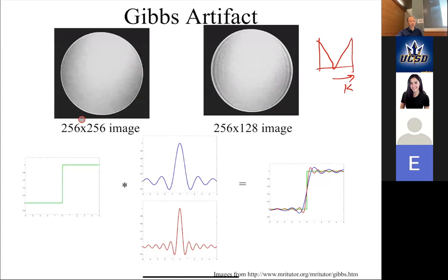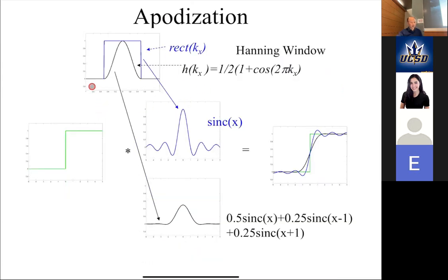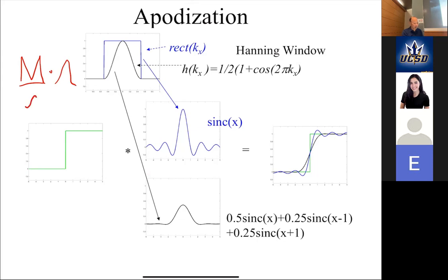So if a technologist sees Gibbs ringing, they could increase the number of phase encodes, increase the matrix size, or many MRI systems will apply some filtering in k-space. Instead of multiplying by a rect function in k-space, you multiply by a smoothing filter — so instead of a sinc function you get a nicer function. You will never see an option for a Ram-Lak filter on an MRI console. On CT, yes, but in MRI that's generally not something you'd want to do.